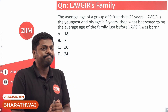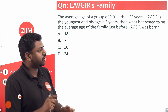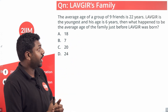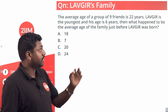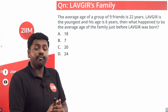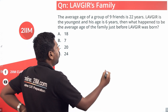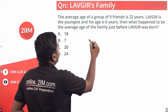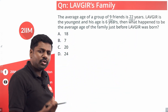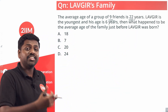Interesting question on averages. The average age of a group of nine friends is 22 years. Lovegear is the youngest and his age is six years. What is the average age of the family just before Lovegear was born? The total number of years for the entire group is 9 times 22.